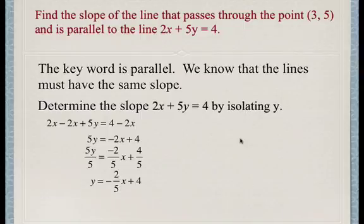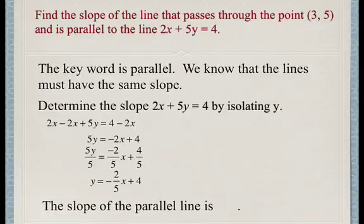Now the question is, what's the slope of the line that's parallel to this line? And so the slope of the parallel line is negative 2 over 5.